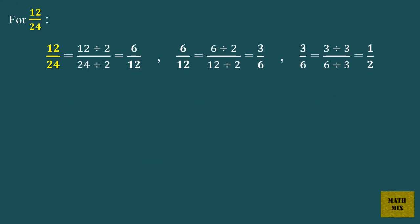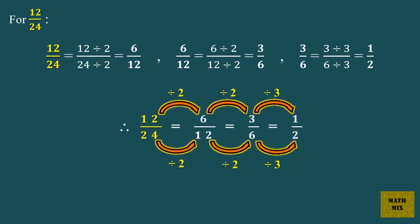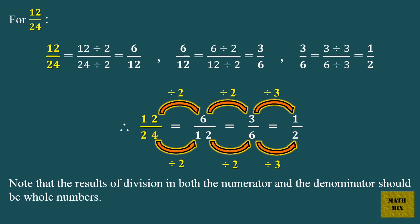For 12 over 24: 12 over 24 equals 6 over 12, which equals 3 over 6, which equals 1 over 2. Therefore 12 over 24 equals 6 over 12 equals 3 over 6 equals 1 over 2. Note that the results of division in both the numerator and the denominator should be whole numbers.